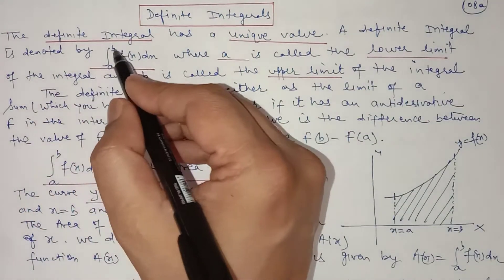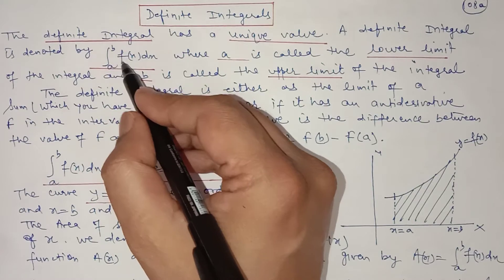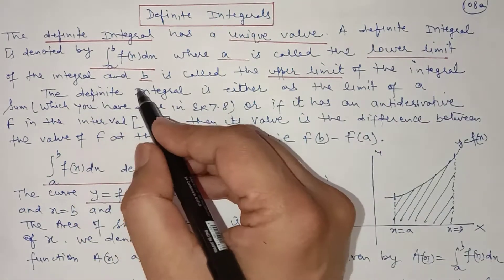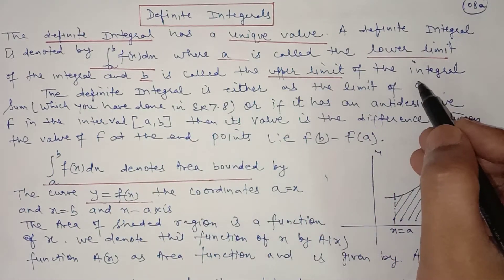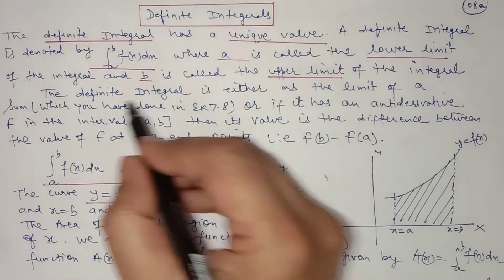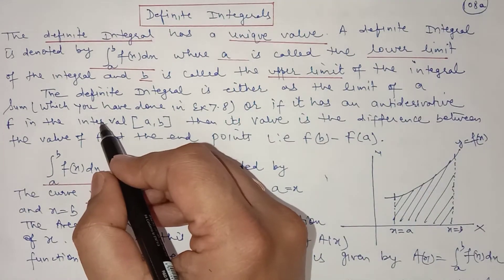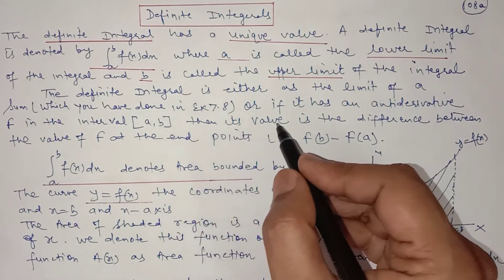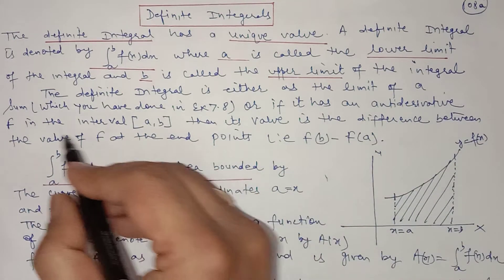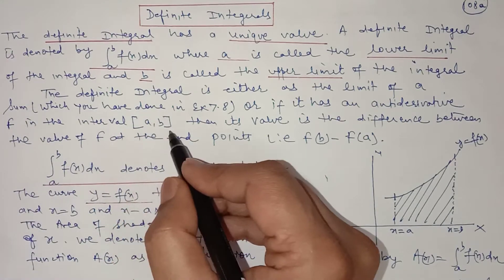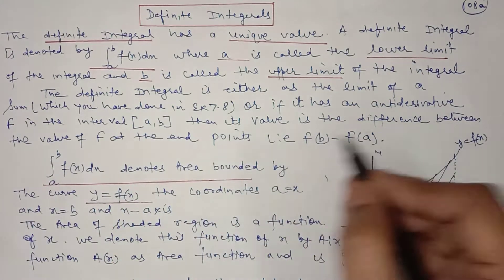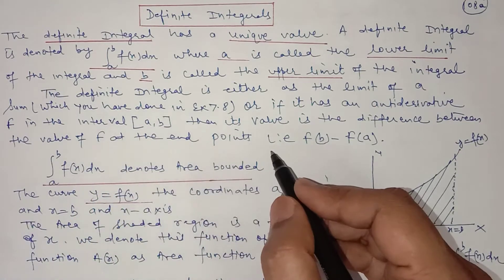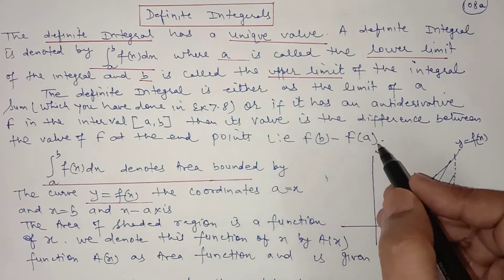A definite integral is denoted by the integration sign from a to b of f(x) with respect to x, where a is called the lower limit of the integral and b is called the upper limit of the integral. The definite integral can be expressed as a limit of a sum, as discussed in the last lecture in exercise 7.8, or if it has an antiderivative capital F in the closed interval [a, b], then its value is the difference F(b) minus F(a).